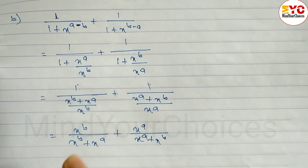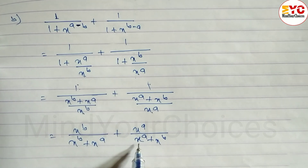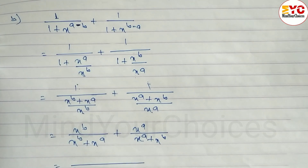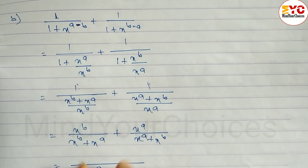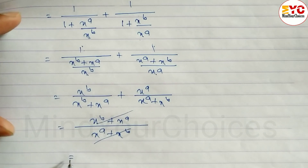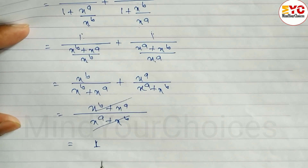Think of it like 2 plus 4 and 4 plus 2 — the answer is the same, 6. So x power B plus x power A and x power A plus x power B are the same. We can take the common factor. The numerator x power A plus x power B and denominator x power B plus x power A cancel out, since they are the same. So the remaining answer is 1.